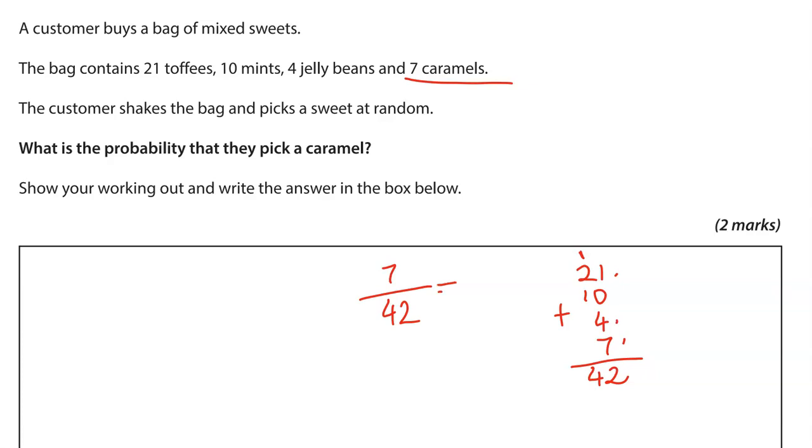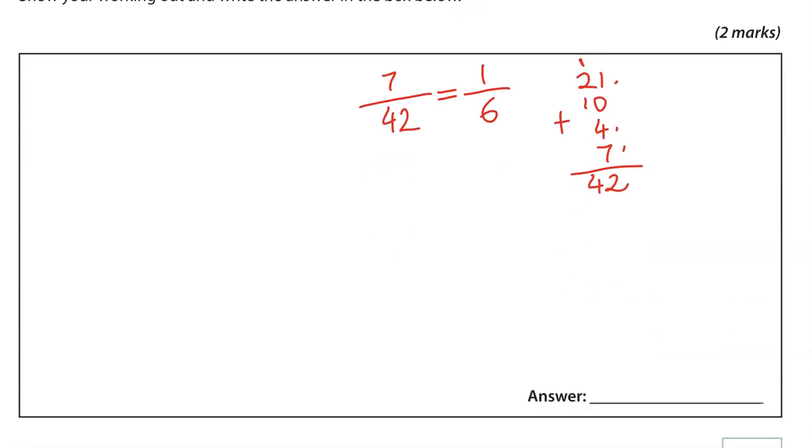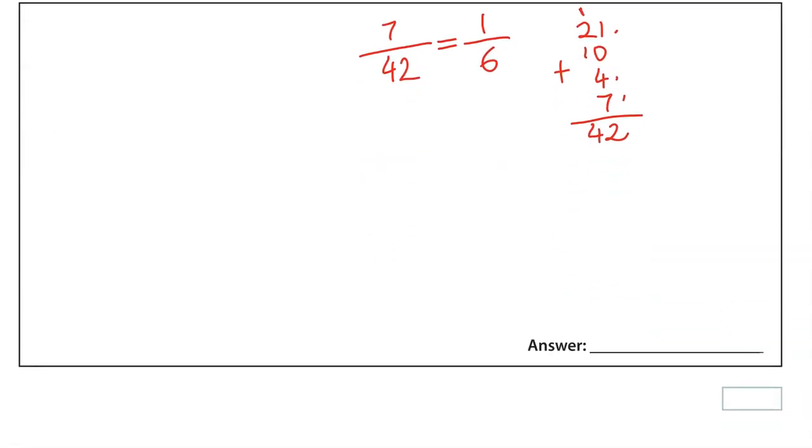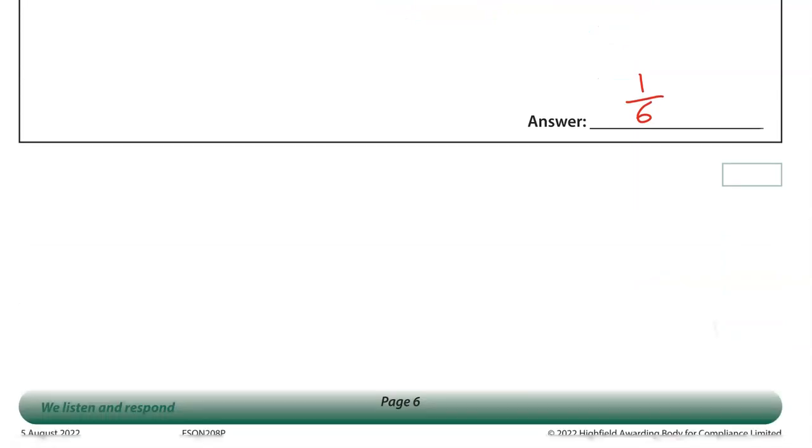So we can divide both of the numbers by 7. So we can simplify. 7 divided by 7 gives us 1. 42 divided by 7 gives us 6. So 1/6 would be the answer. You could write it as a decimal or a percentage and it should be absolutely fine.